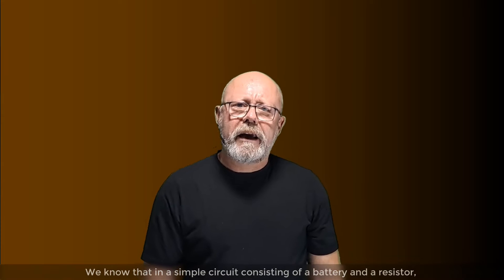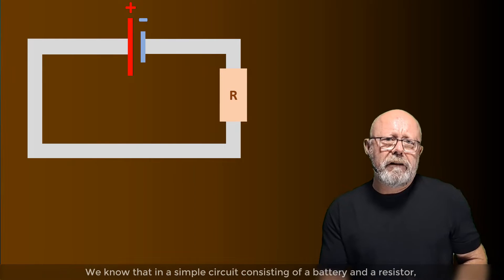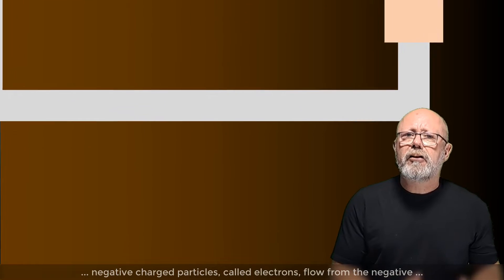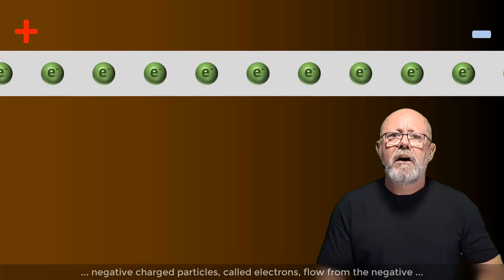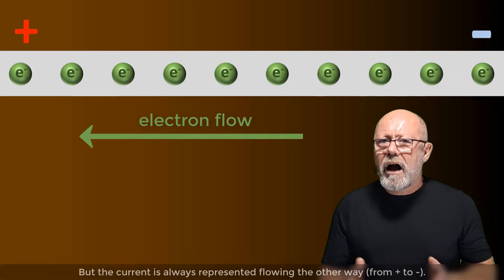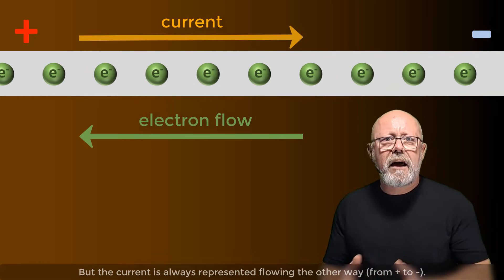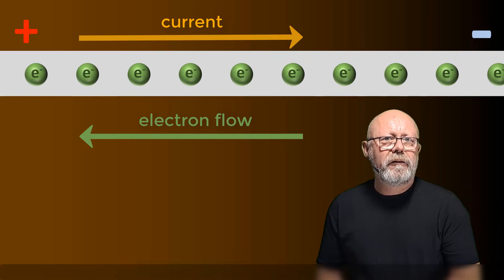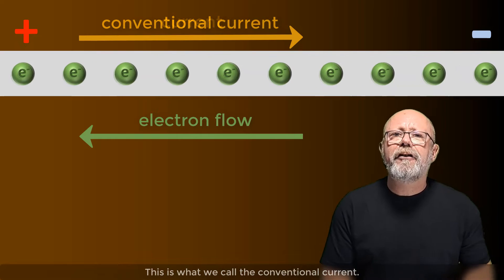We know that in a simple circuit consisting of a battery and a resistor, negatively charged particles, called electrons, flow from the negative pole of the battery to the positive pole. But the current is always represented flowing the other way, from plus to minus. This is what we call the conventional current.